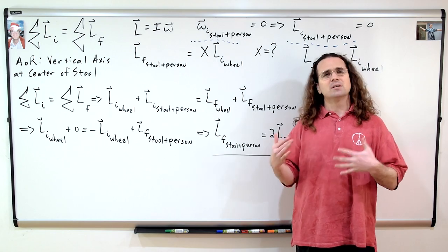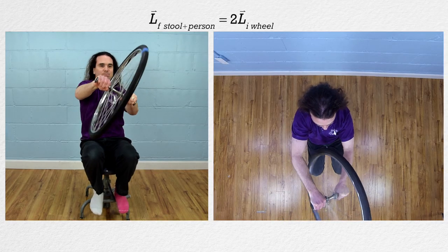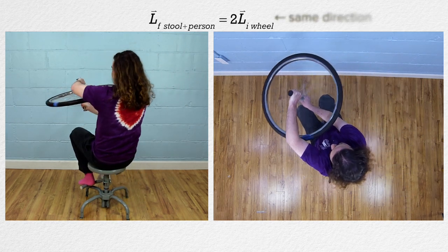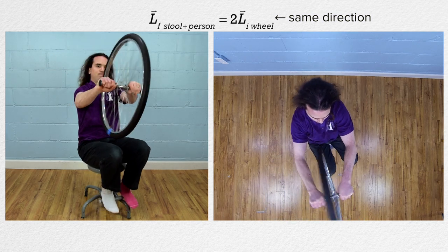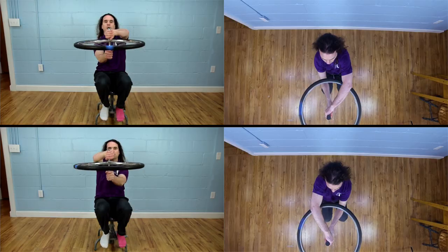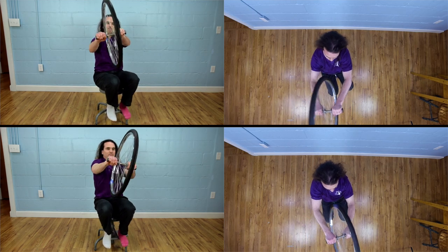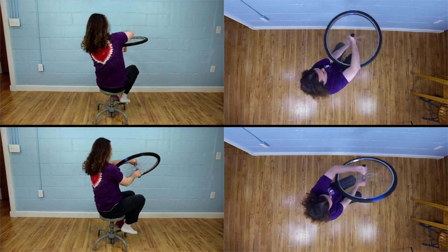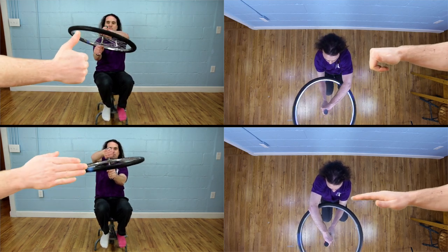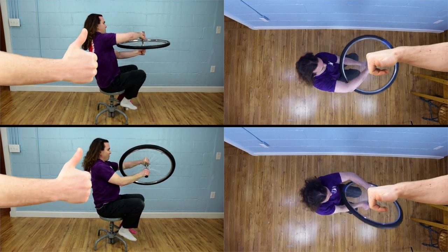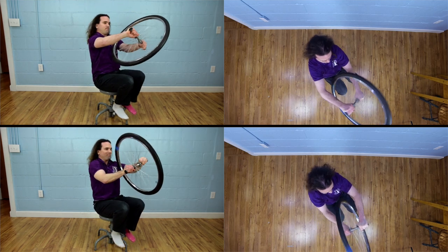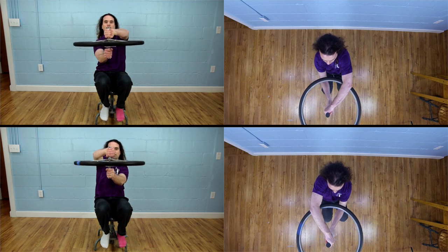That was really great. Notice there is an interesting result to our solution. The direction of the final angular momentum of the stool and person is the same as the direction of the initial angular momentum of the wheel. And the interesting piece is that this is true regardless of the direction the person rotates the spinning wheel. Initially the wheel has an upward angular momentum, and as you rotate the wheel you gain an upward angular momentum. And even when you rotate the wheel the other direction, you still gain an upward angular momentum. That is weird, but that is what our solution says will happen.